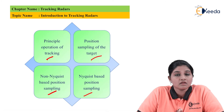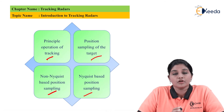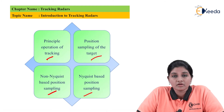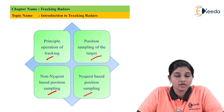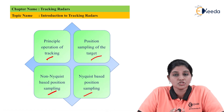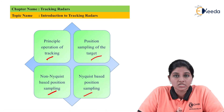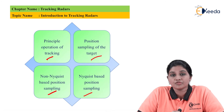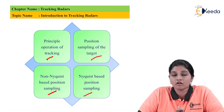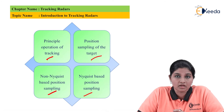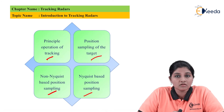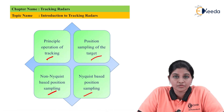In case of tracking radar, the radar is required to first find the target before starting to track it. Therefore, in some radars it first uses a search mode, and after finding the target it switches into the tracking mode. Since tracking takes place continuously, tracking radars are also called continuous tracking radar or continuous mode radar.